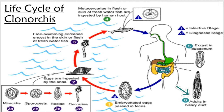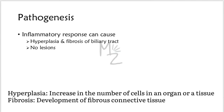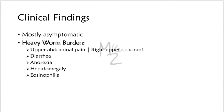In terms of pathogenesis, in some infections the inflammatory response can cause hyperplasia and fibrosis of the biliary tract, but often there are no lesions. Epidemiology: Clonorchiasis is endemic in China, Japan, Korea, and Indochina, where it affects about 20 million people.